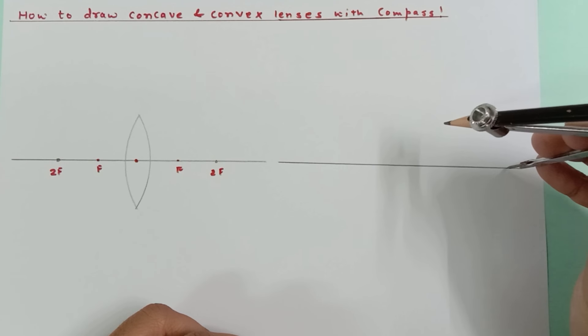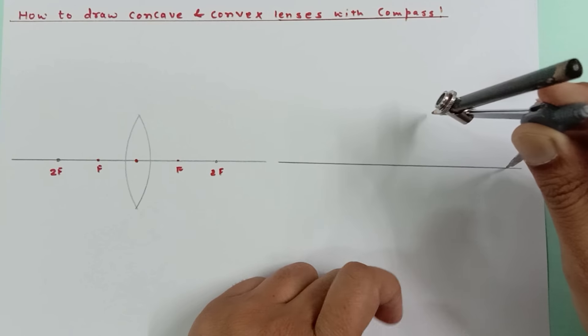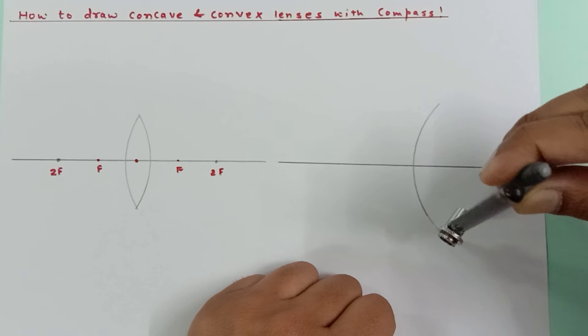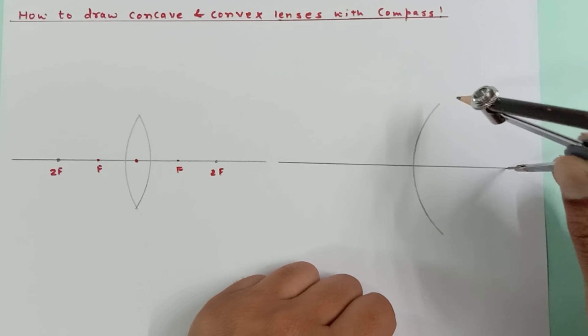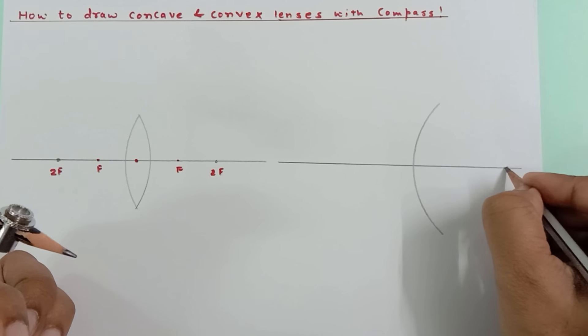Again, from here, almost at the end of the line, I'm going to draw a curve like this. Again, I need to mark this point because this is going to be my 2F.